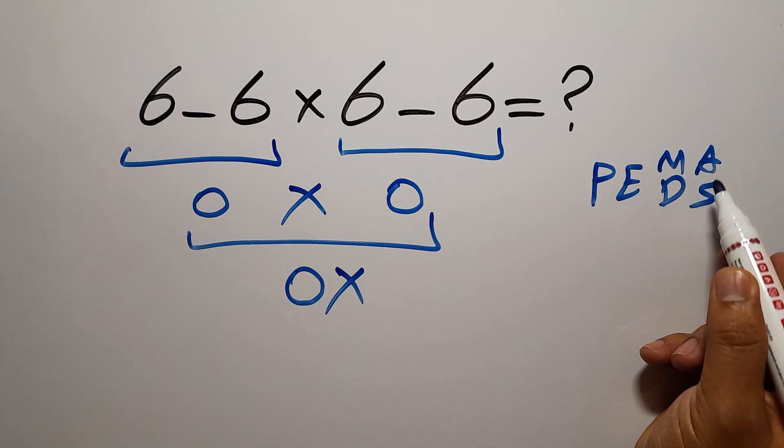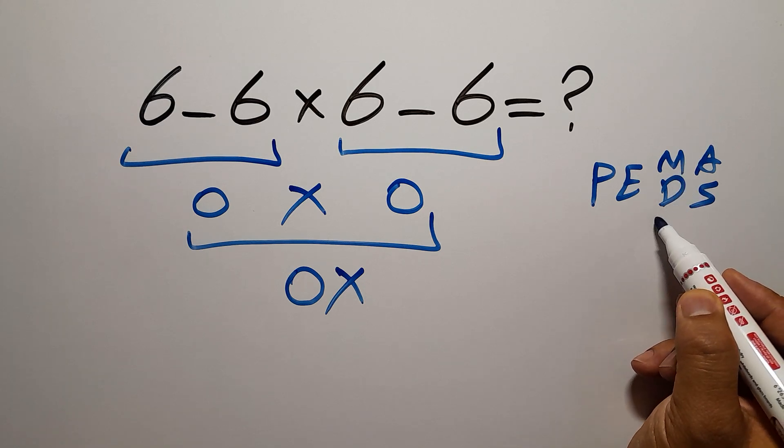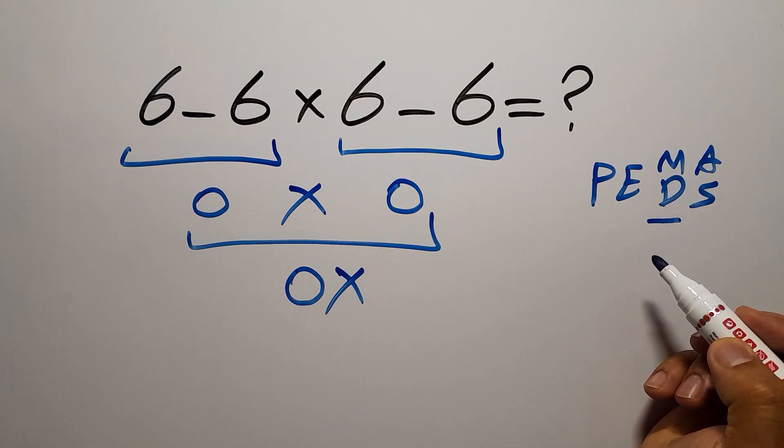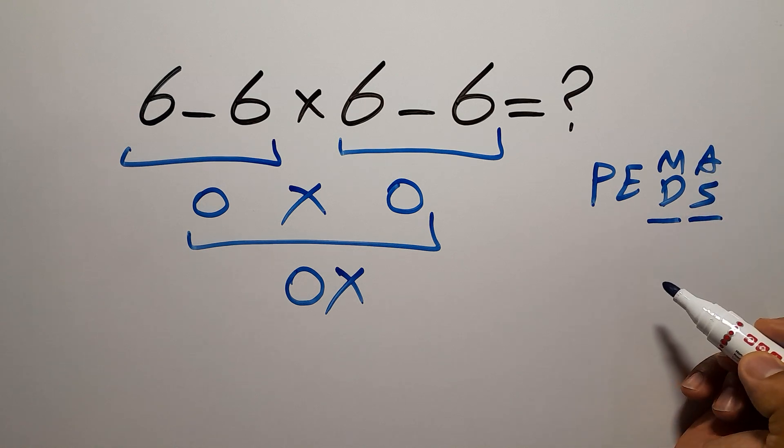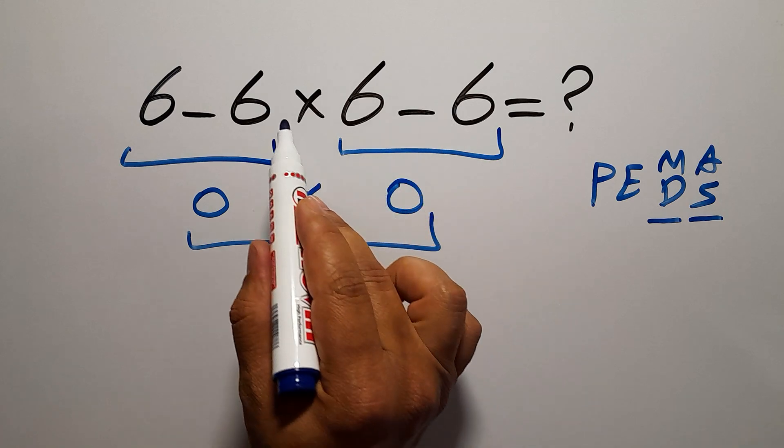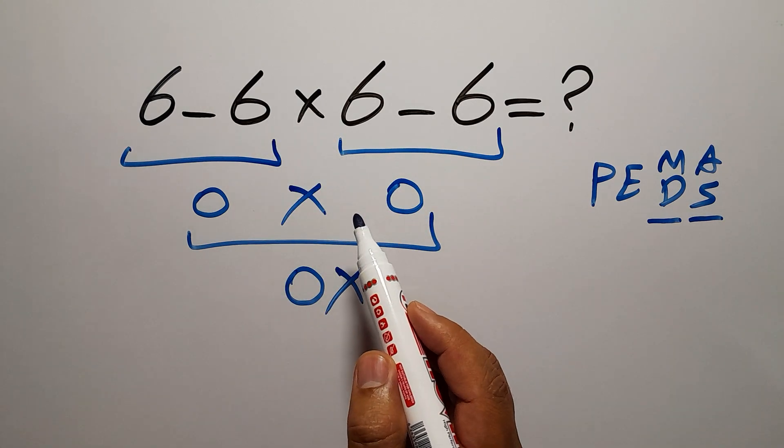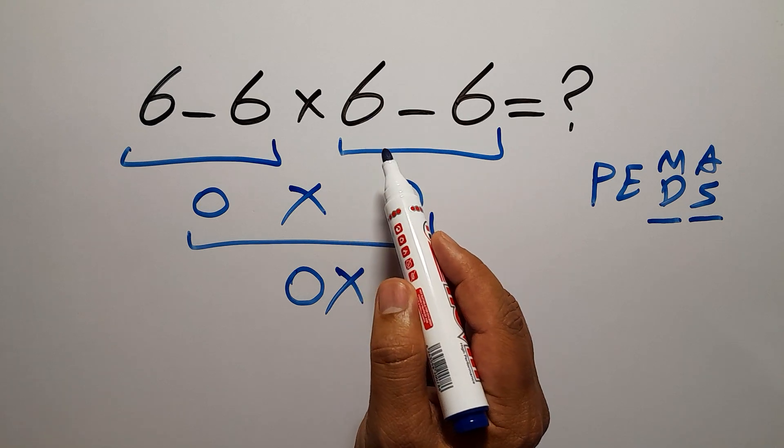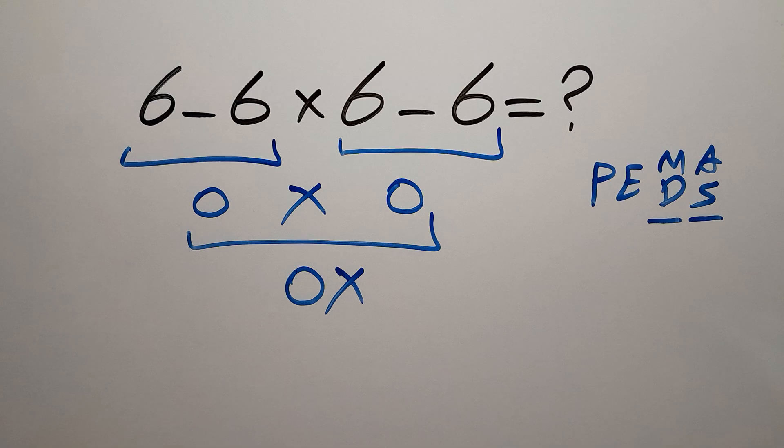Remember that multiplication and division have equal priority and we have to work from left to right, and the same applies to addition and subtraction. Here in this expression we have two subtractions and one multiplication. In PEMDAS, multiplication comes before subtraction, so first we have to do this multiplication.